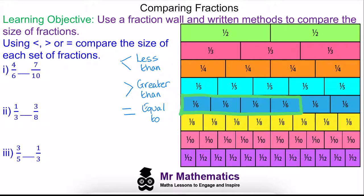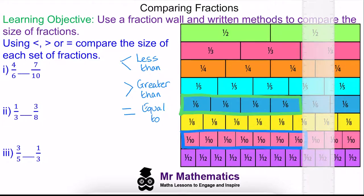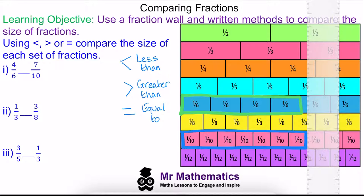You can see we have four sixths on our fraction wall highlighted in green, and we can compare this to seven tenths which is highlighted in blue. To compare the two we'll use a ruler, and you can see that seven tenths is slightly greater than four sixths.